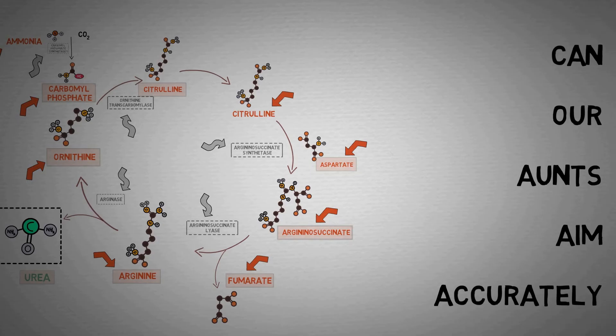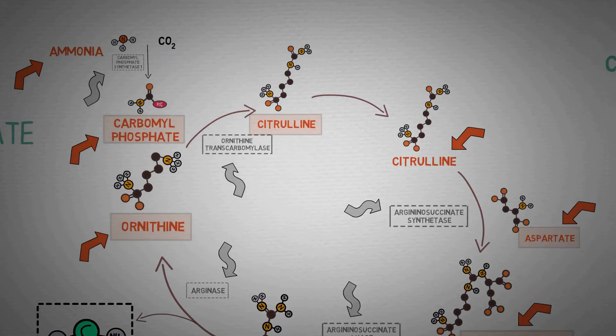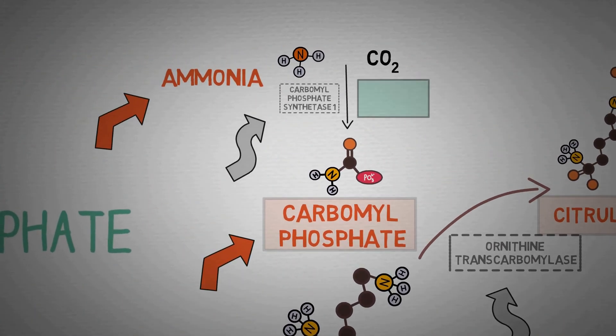The C in can stands for carbamyl phosphate synthetase-1, which is this enzyme right here. This does the job of combining ammonia with carbon dioxide and leads to the formation of carbamyl phosphate.